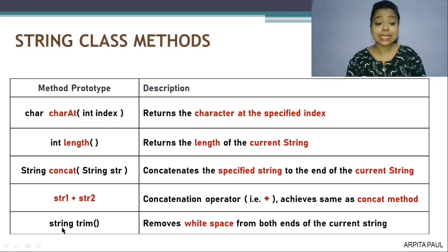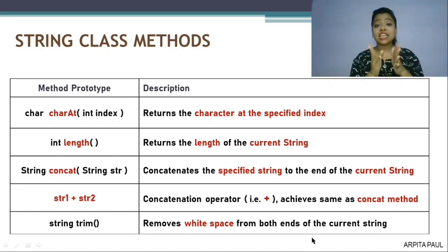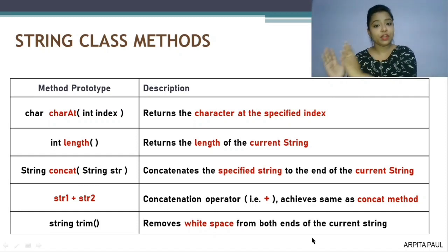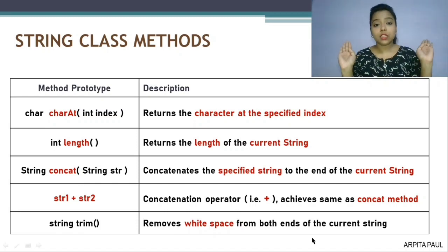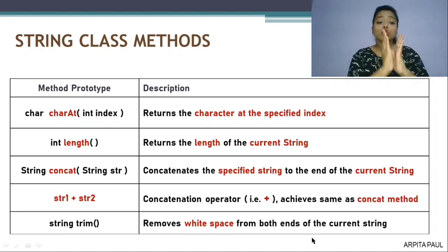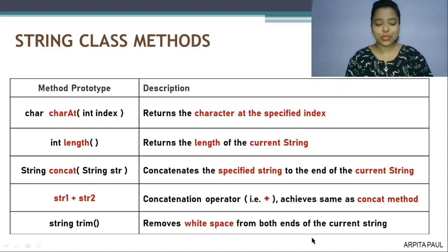The next one is trim. The purpose of this trim string method is to remove white space from both ends of the current string. If there is any extra space at the starting point and the ending point of a string, this string function will remove both the white spaces and print only the string. So these are five popular string methods, and now I will show you how to use them in a program.